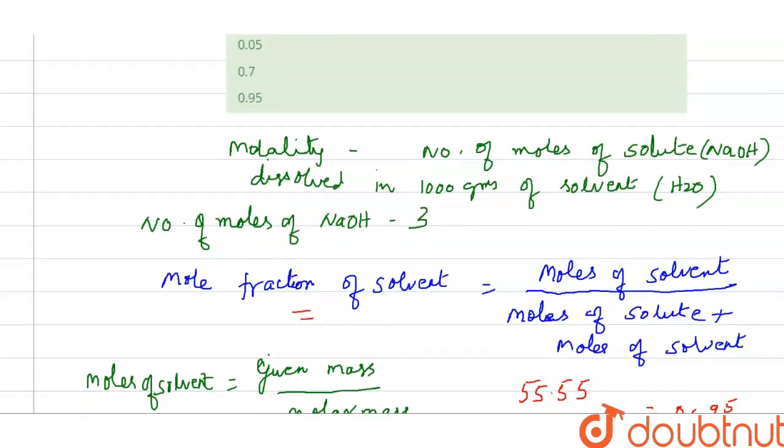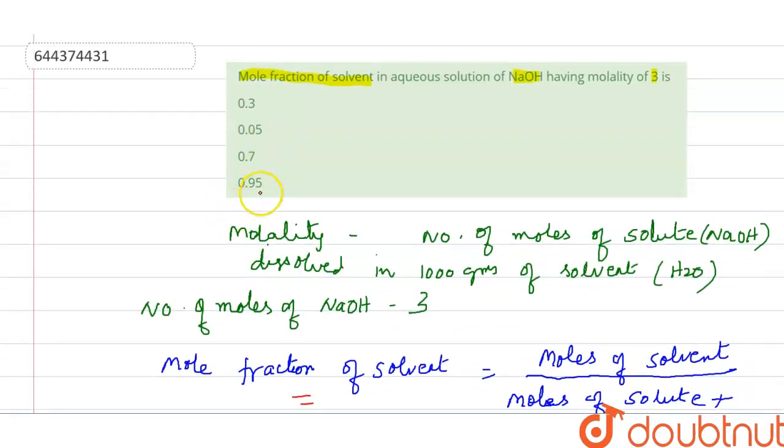Let us see whether this is there in the options. Yes, the fourth option is 0.95, and this is the answer. I hope all of you have understood. Thank you.